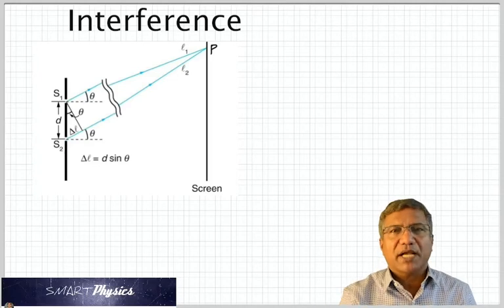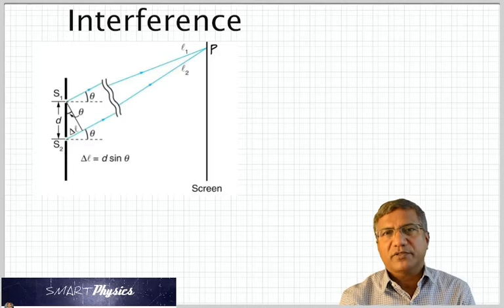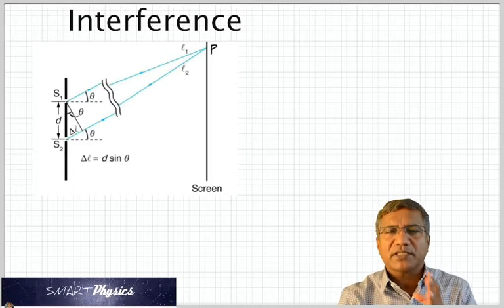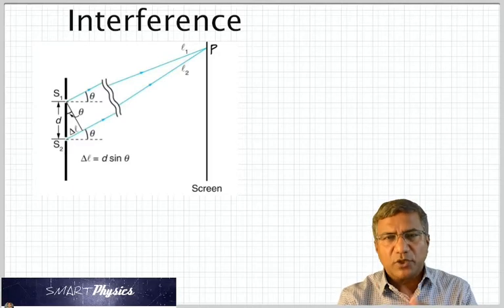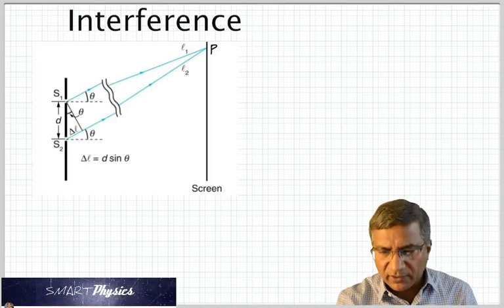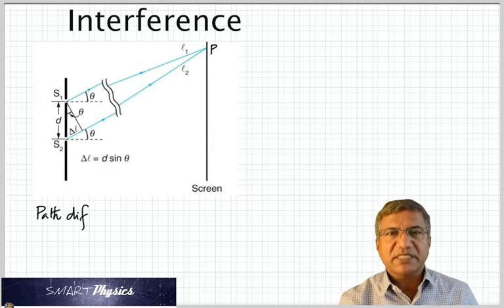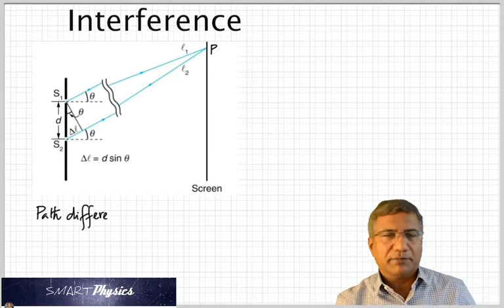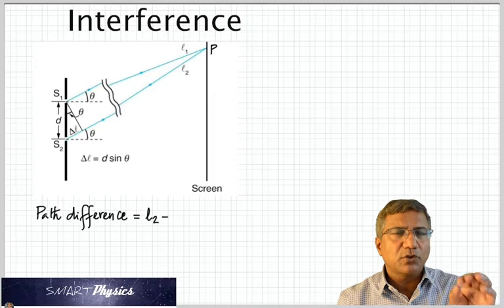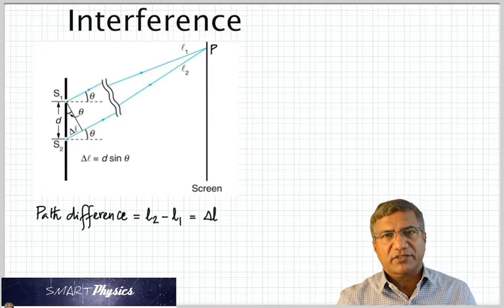So whenever you get a maxima, the path difference is going to be either one times the wavelength, twice, three times, four times, or in summary, whenever the path difference is M times lambda, where M can take values 0, 1, 2, 3, 4, etc., you're going to get brightness.